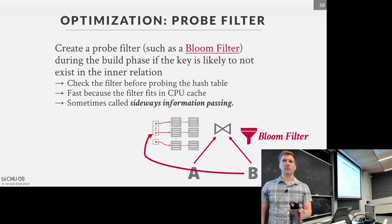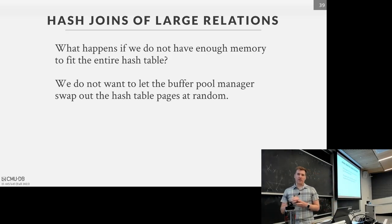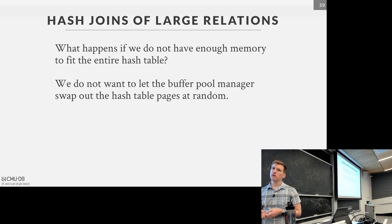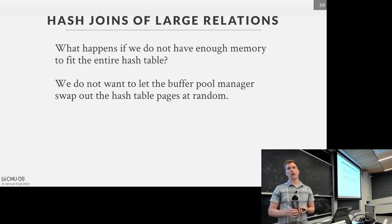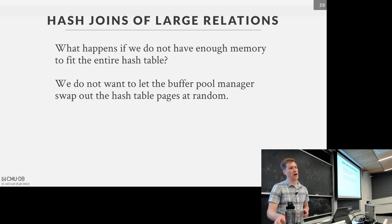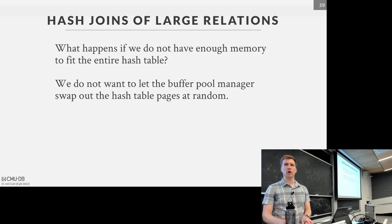Q&A: Even if the hash table fits in memory, would a bloom filter still be faster? Generally yes — the bloom filter has a better chance of staying warm in your CPU cache. Hash tables aren't as cache-friendly depending on implementation; with linear probing you're jumping around through pointers. Even in-memory systems often rely on bloom filters before doing a hash lookup.